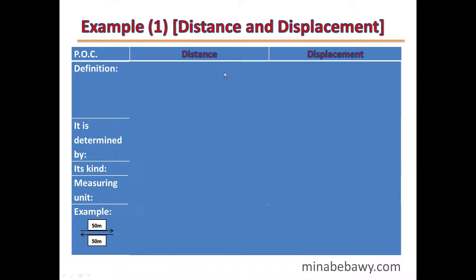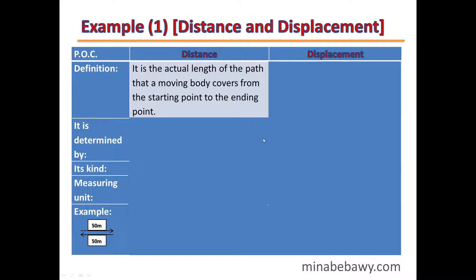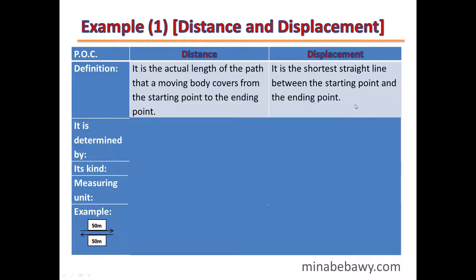Let's compare between distance — as an example of a scalar physical quantity — and displacement — as an example of a vector physical quantity. Distance is the actual length of the path that a moving body covers from the starting point to the ending point. Displacement is the shortest straight line between the starting point and the ending point.